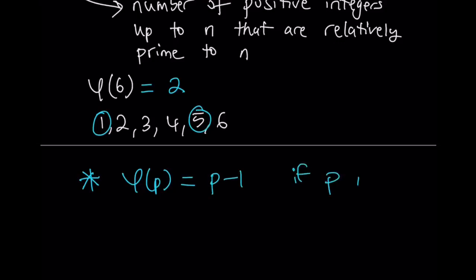Why is that true? Because a prime number — pretty much everything less than it is relatively prime to it, since prime numbers only have two divisors: 1 and itself. A prime number and 1 are also relatively prime, so everything counts except p itself. So we subtract one.